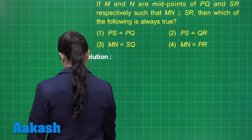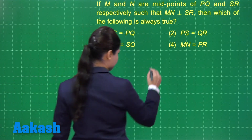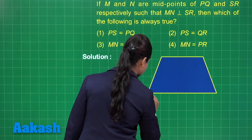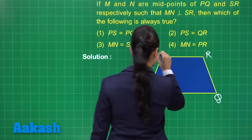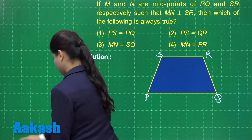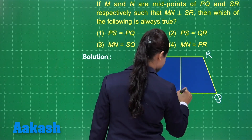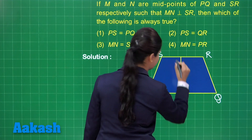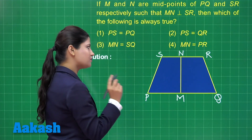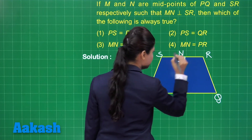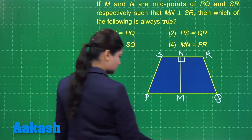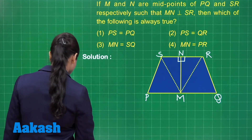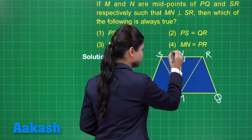I am going to draw a trapezium PQRS. Here I have the point M on PQ and the point N on SR. MN is perpendicular to SR. Let us further join SM and MR. As per the given information, N is the midpoint, so SN is equal to NR.